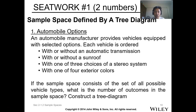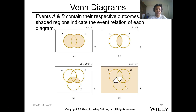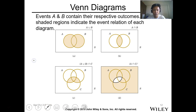We'll proceed to the next lesson. We can represent events and the sample space using a Venn diagram. This is an example of a Venn diagram where we have two events A and B. The sample space is given by the square, and the circles are events A and B. Different relationships among events can be represented by a Venn diagram.